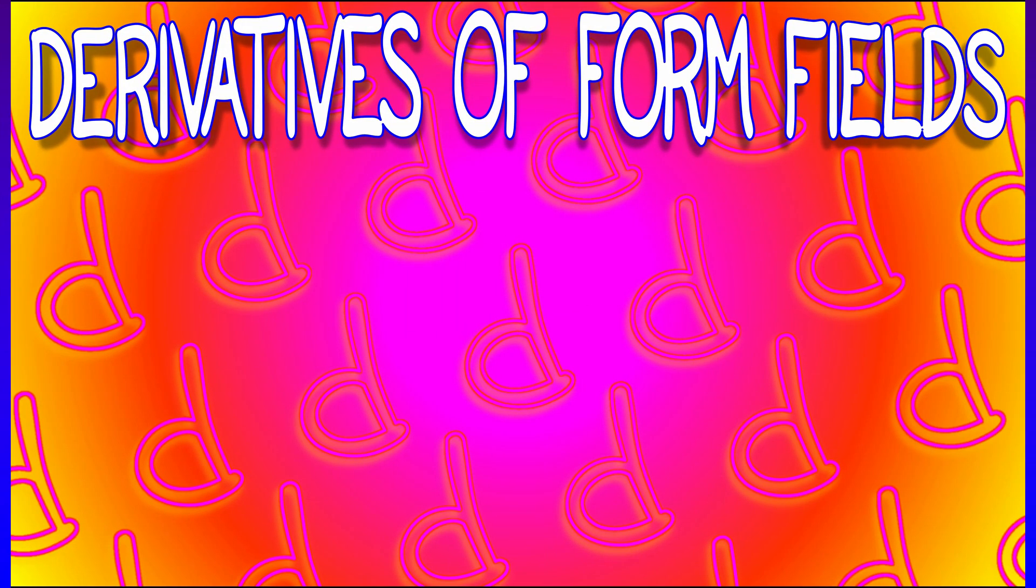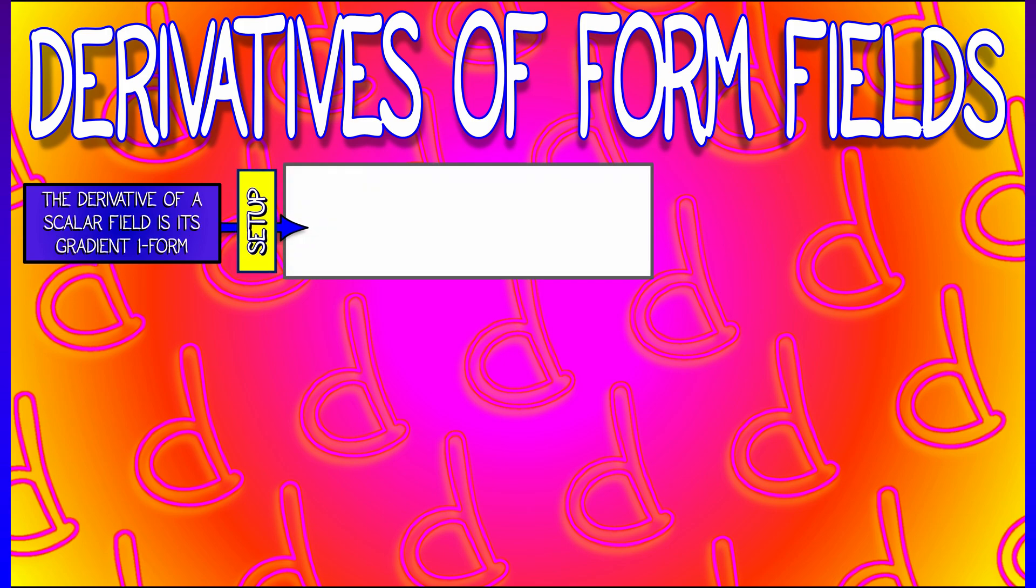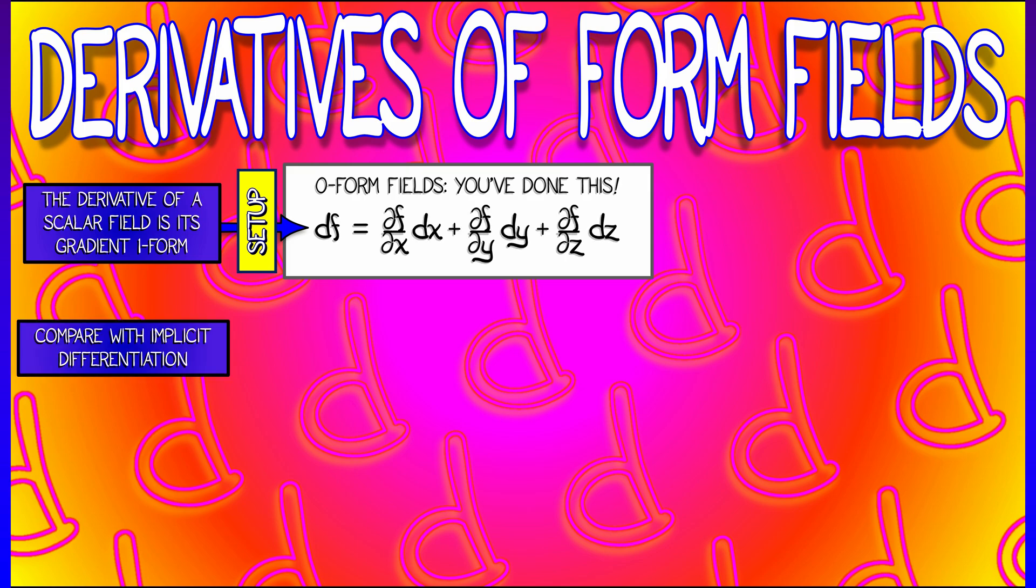Let's talk about differentiating form fields, starting with the simplest possible case, where we look at a zero-form field, a scalar field f. The derivative of f, df, is the gradient one-form field. That is partial f partial x dx plus partial f partial y dy plus partial f partial z dz. This follows really naturally from implicit differentiation. We're already used to this notion of the derivative of a zero-form field.